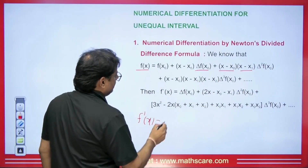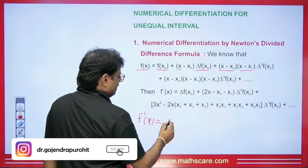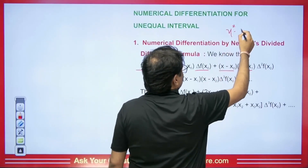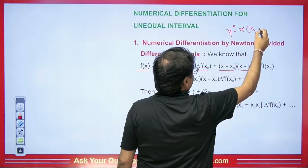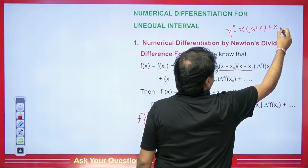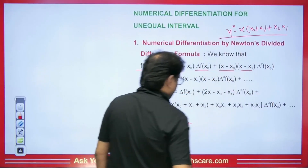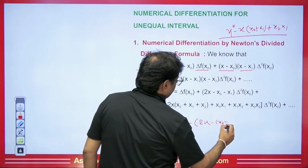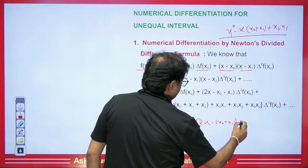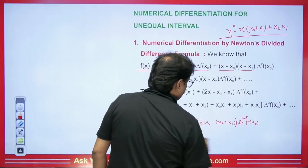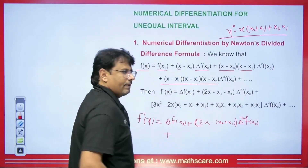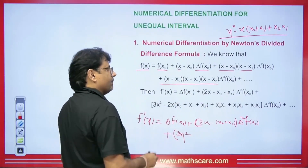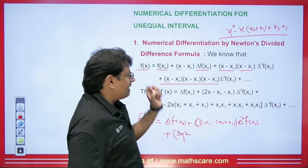Students, if you differentiate this with respect to x, the constant term f(x0) will become 0. Here (x - x0) differentiates to give 1, so we get Δf(x0). When we multiply (x - x0)(x - x1), it expands to x² minus x(x0 + x1) plus x0·x1. Its derivative will be 2x minus (x0 + x1), giving us that term multiplied by Δ²f(x0). When the three factors are multiplied, an x³ term will come, so the derivative of x³ gives 3x².